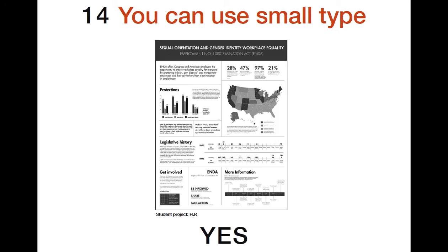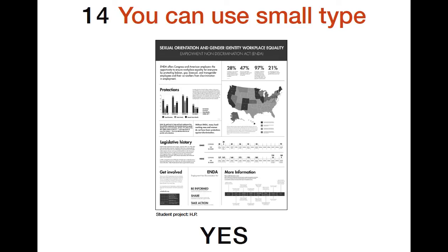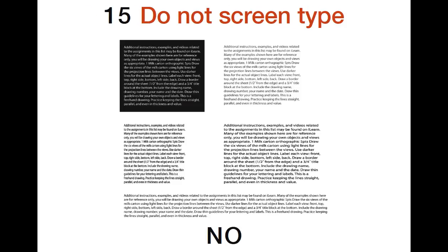You can use a range of 16 to 24 point type for a poster, excluding the main title. For short texts use 24 point. In general, imagine standing 20 to 30 inches from the poster — at that distance you should be able to read most elements, and further back you get the full picture. Don't mess with type: don't screen type — don't make tints out of black, especially at small sizes.